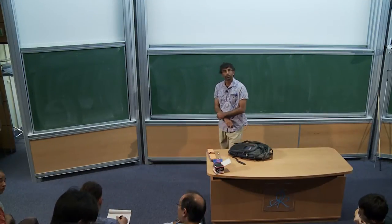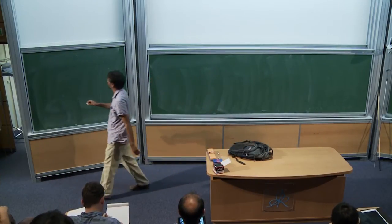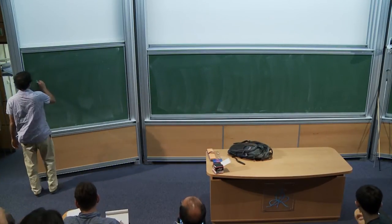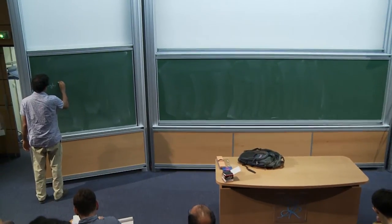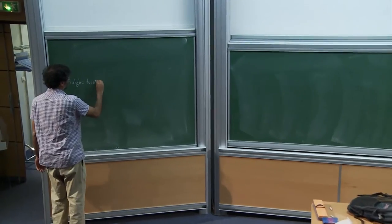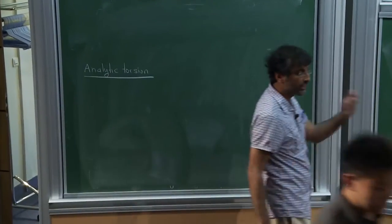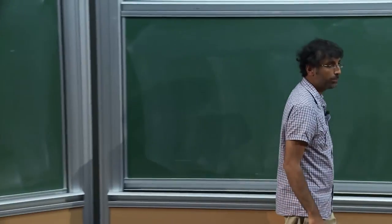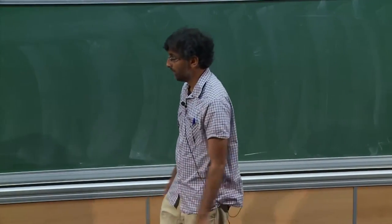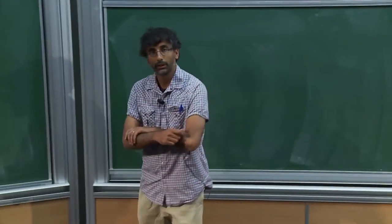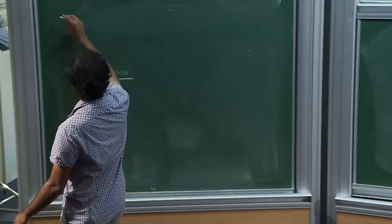I wanted to explain the remaining terms in this analytic torsion formula. So far I've discussed what we expect and some heuristics for it, and I'll discuss a bit what we can prove.